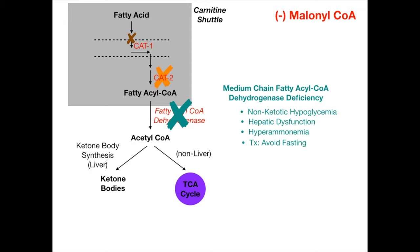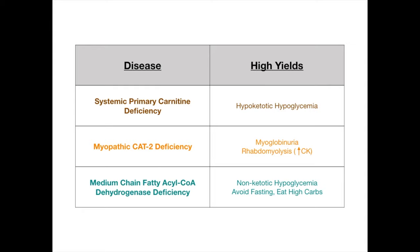The treatment for MCAD deficiency is to avoid fasting and constantly eat carbohydrates, so the body never needs to form ketones. Summarizing all three diseases: systemic primary carnitine deficiency causes hypoketotic hypoglycemia; myopathic CAT-2 deficiency causes rhabdomyolysis, myoglobinuria, dark urine, elevated CK, and increased creatinine; and medium chain fatty acyl-CoA dehydrogenase deficiency causes non-ketotic hypoglycemia — avoid fasting.